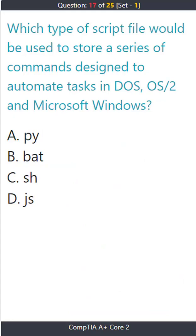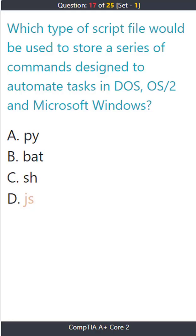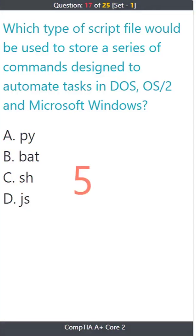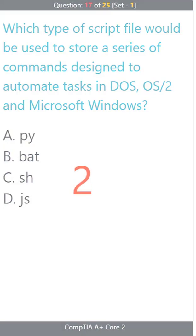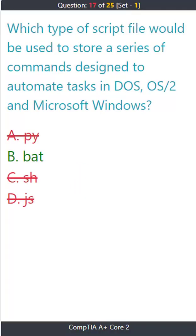Question 17: Which type of script file would be used to store a series of commands designed to automate tasks in DOS, OS/2, and Microsoft Windows? A) .pi. B) .bat. C) .sh. D) .js. The correct answer is B: .bat.